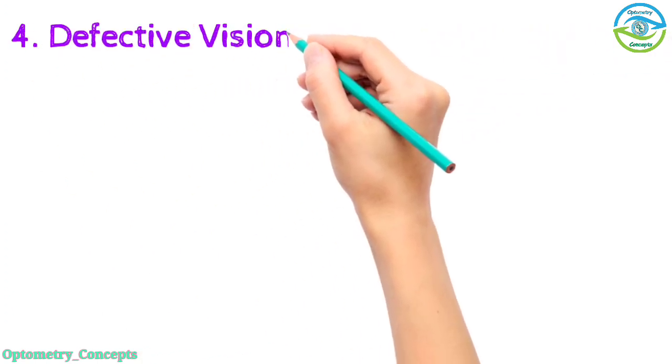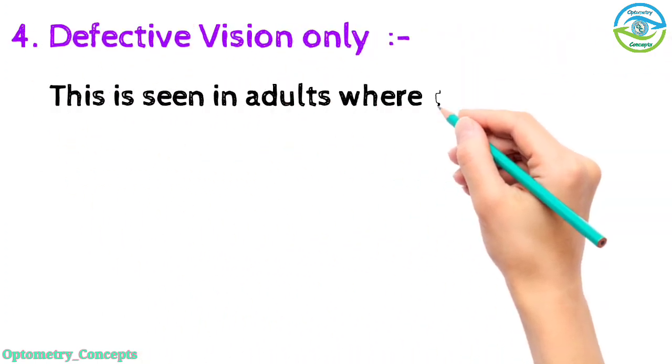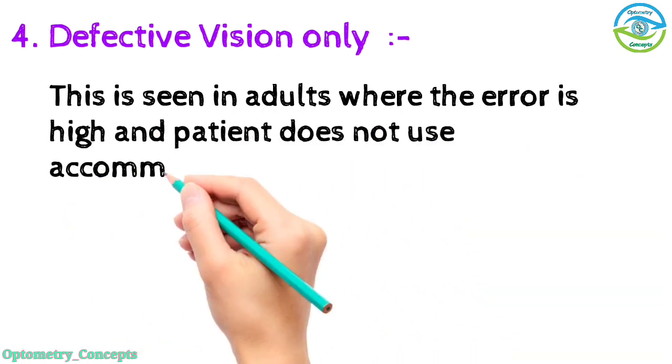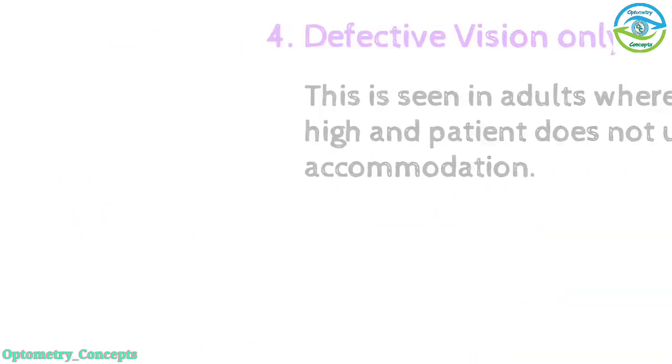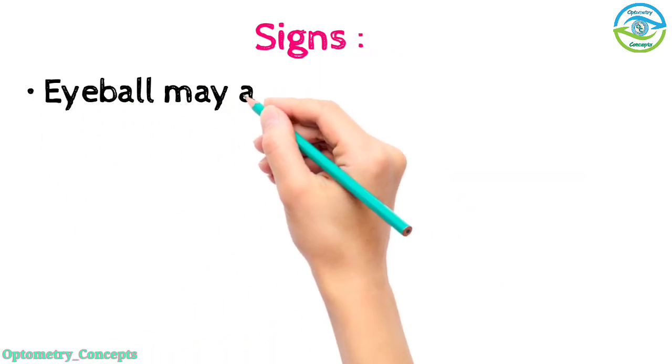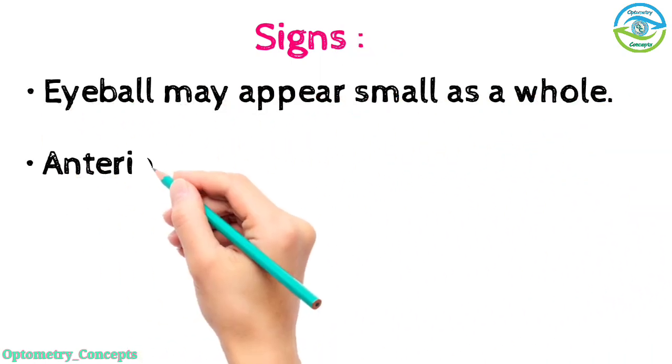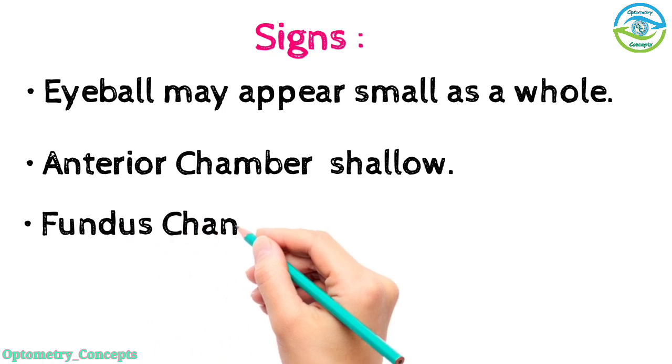Defective vision along with asthenopic symptoms - when the refractive error is not fully corrected by sustained accommodation. Defective vision only - this is seen in adults where the error is high and patient does not use accommodation. Signs: eyeball may appear small as a whole. Anterior chamber: shallow. Fundus change: small disc, looks more vascular and ill-defined margin.